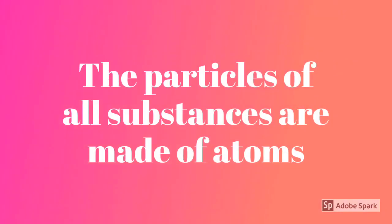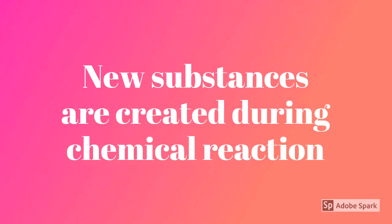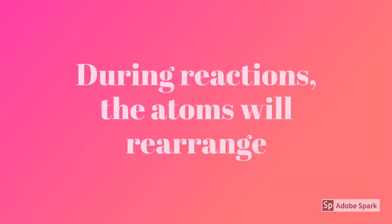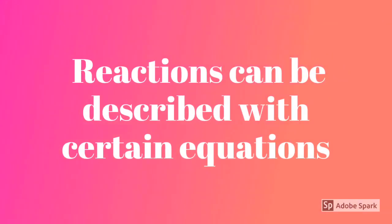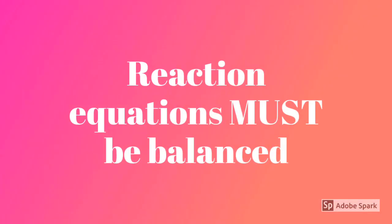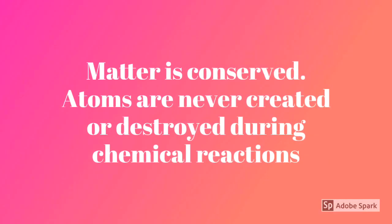The particles of all substances are made of atoms. The kind, number, and arrangement of atoms determines the kind of substance. New substances are created during chemical reactions — during reactions, atoms rearrange. The atoms in the particles of reactant substances rearrange to form the particles of the products. Reactions can be described with equations, using atom representations or chemical formulas. Reaction equations must be balanced: the number of atoms of each kind must be equal on both sides. Balance is achieved by changing the number of particles reacting. Matter is conserved — atoms are not created or destroyed during chemical reactions; they are rearranged to create new particles of substances.